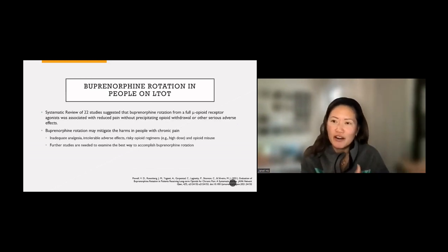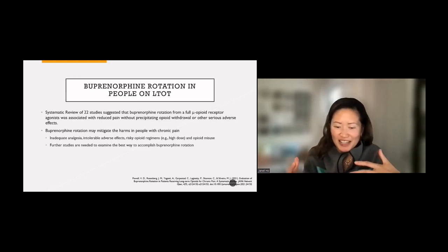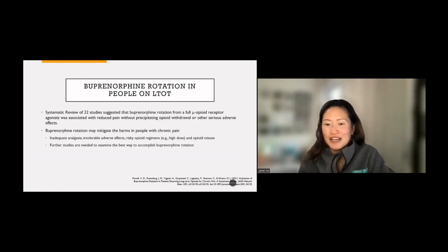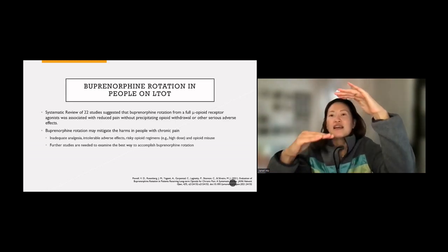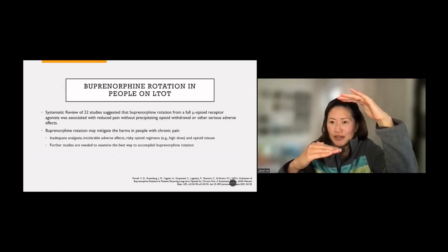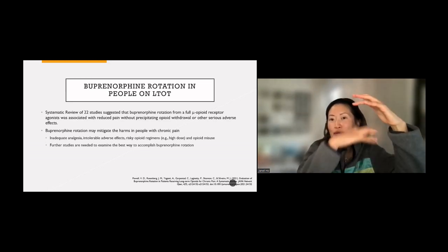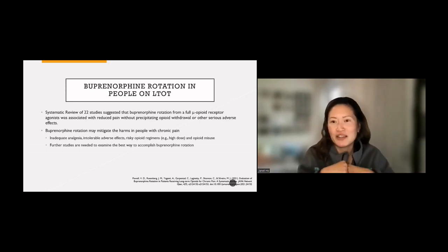So buprenorphine rotation in people on long-term opioids. One of the lingering misperceptions from the era of the X-Waiver, which is now gone—so anybody with a DEA license can prescribe buprenorphine for any indication—is that sometimes people have this carryover shadow from the X-Waiver training that buprenorphine can cause precipitated withdrawal in somebody who's on full agonist. And that's true if you add the buprenorphine into a system where there is full agonist that is active on the mu-opioid receptor. And this is because buprenorphine has a really high binding affinity, so higher than most of the other opioids.